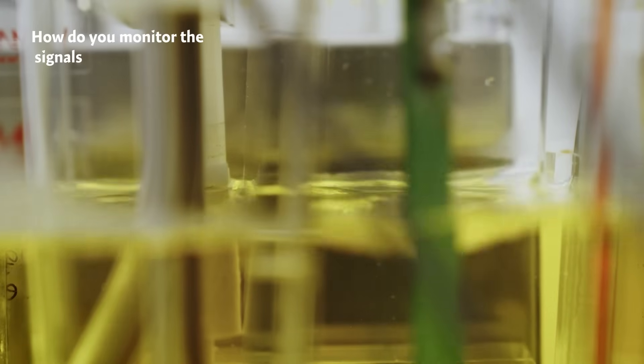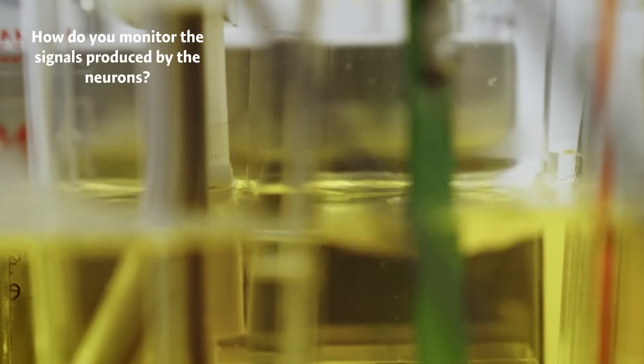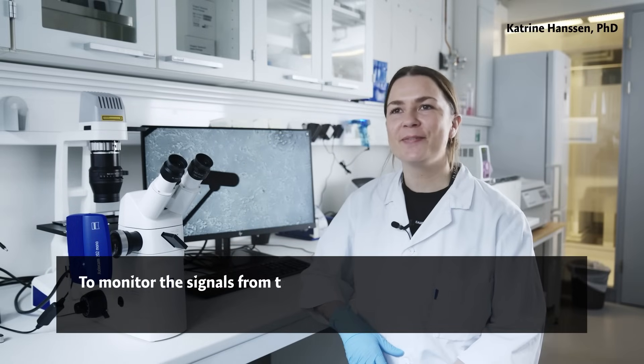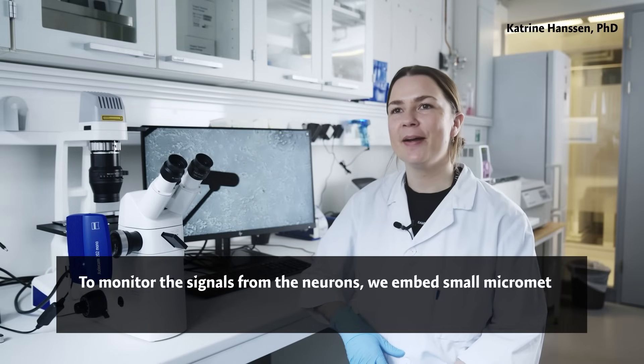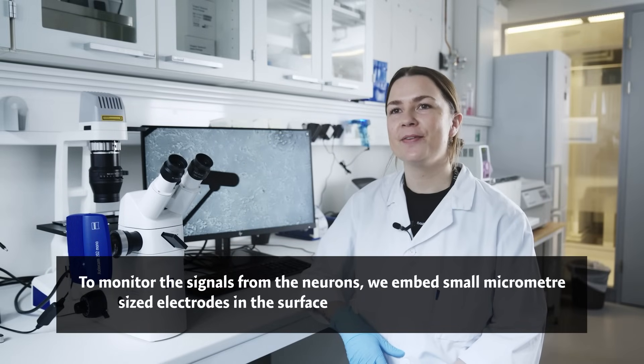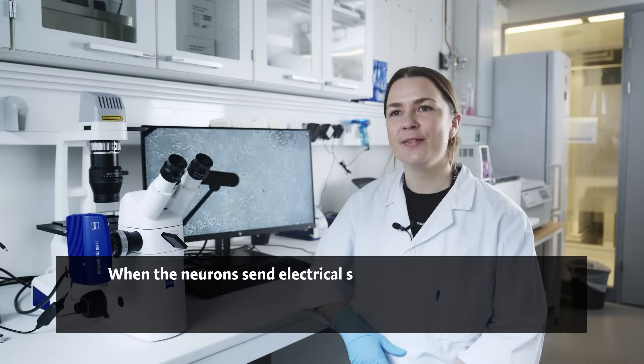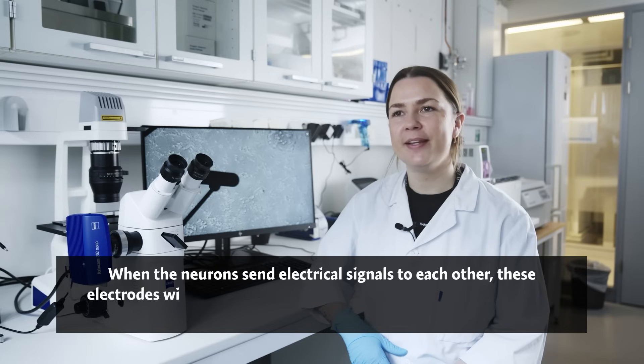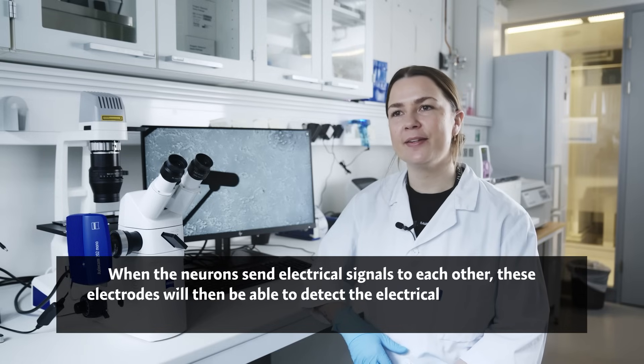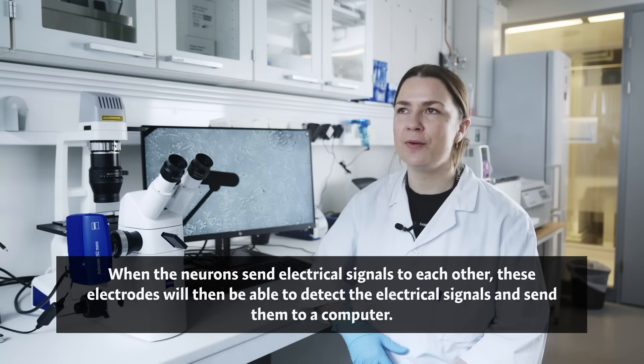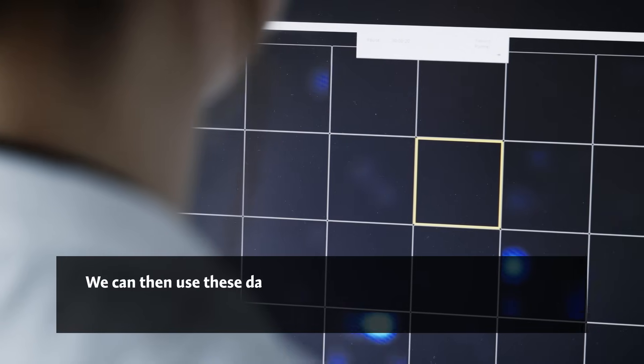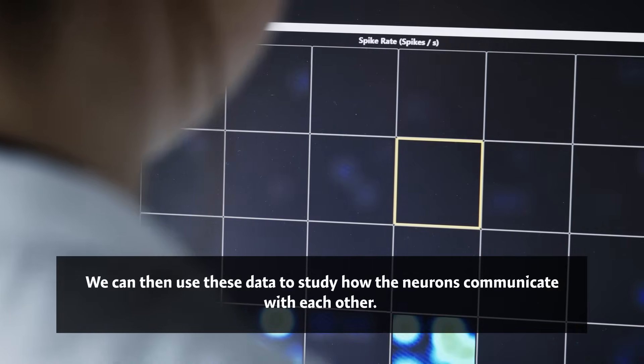How do you monitor the signals produced by the neurons? To monitor the signals from the neurons, we embed small micrometer-sized electrodes in the surface on which the neurons grow. When neurons send electrical signals to each other, these electrodes will be able to detect the electrical signals and send them to a computer. We can then use this data to study how the neurons communicate with each other.